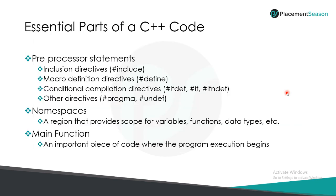As we understand from the execution process there are some important parts of a C++ code without which it cannot be executed. Firstly we have the pre-processed statement that starts with a hash symbol. These statements examine the code before actual compilation begins and resolve all these directives before any code is actually generated by regular statements.